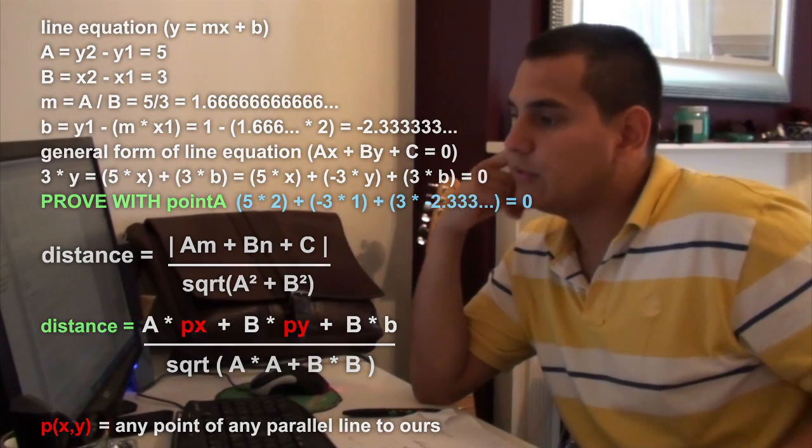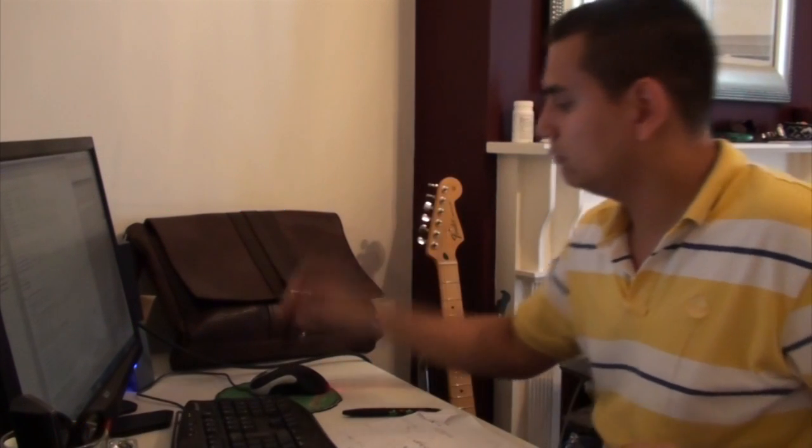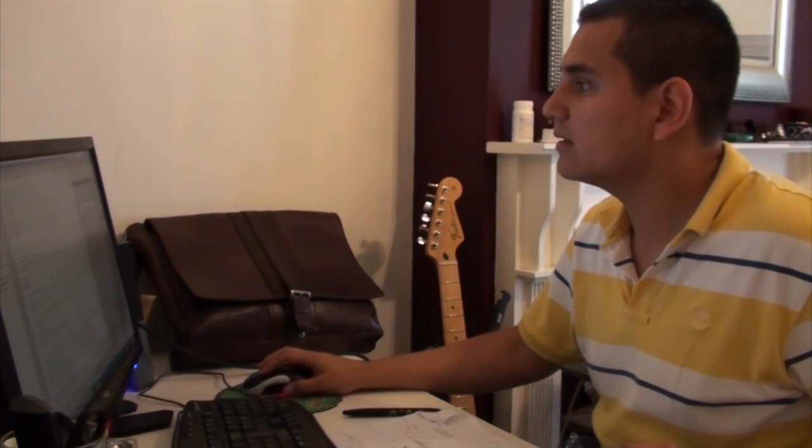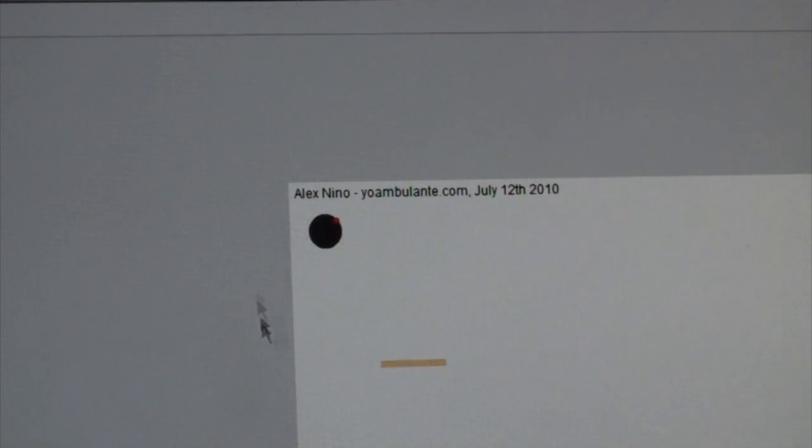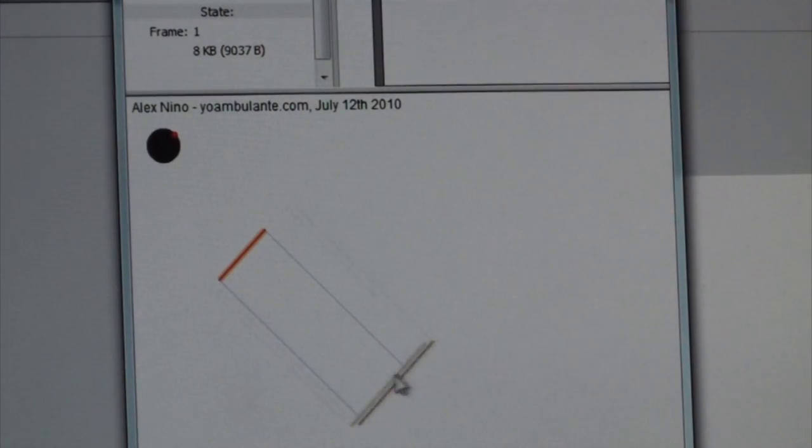And now I would like to show you the algorithm in action, how it looks like. So let's see. This is a demo I did to show how the algorithm works. You can download the source code from my website, joanvolante.com. You should just drag here the lines, and it always will tell you what is the distance in pixels. You can rotate the lines. Yeah, it works quite well.